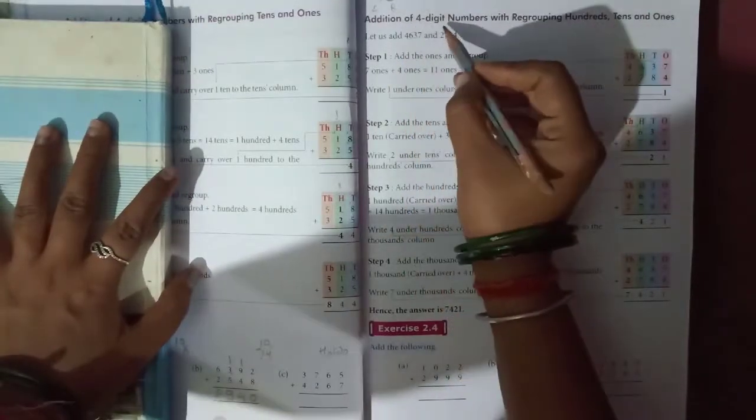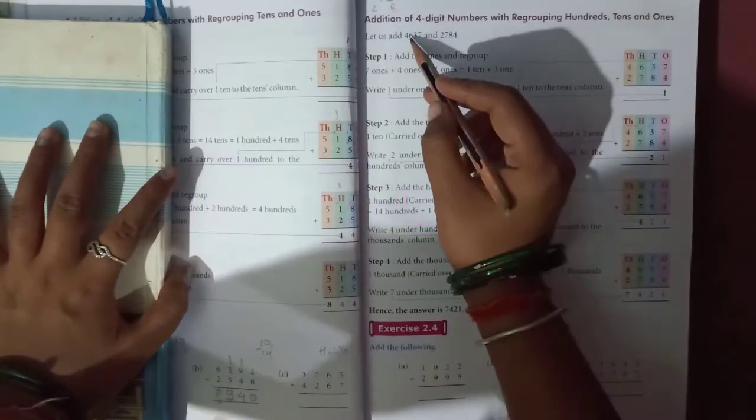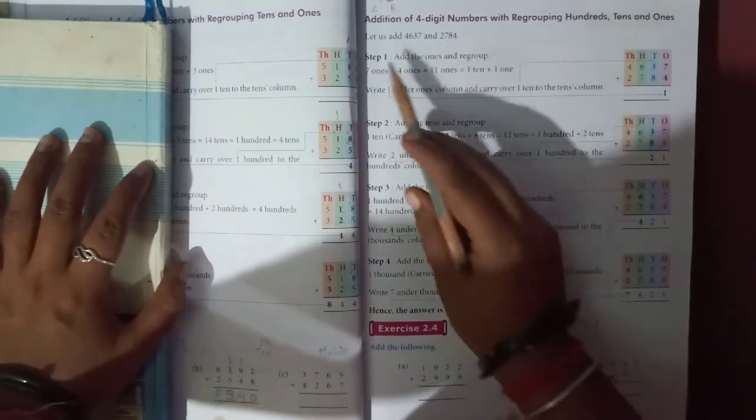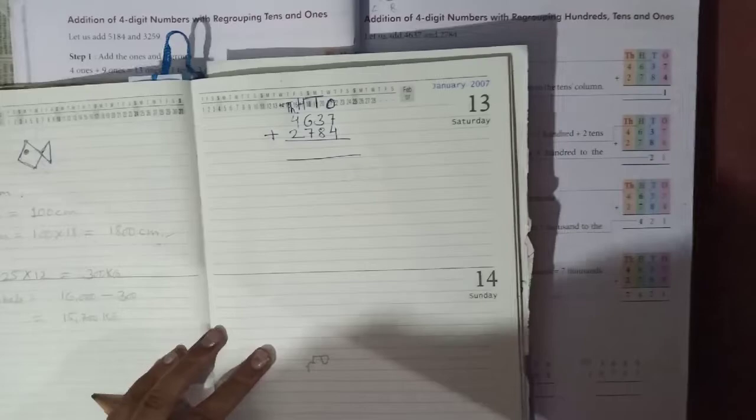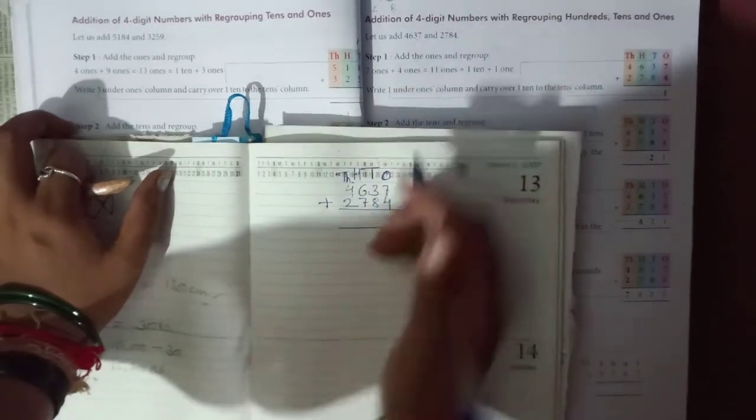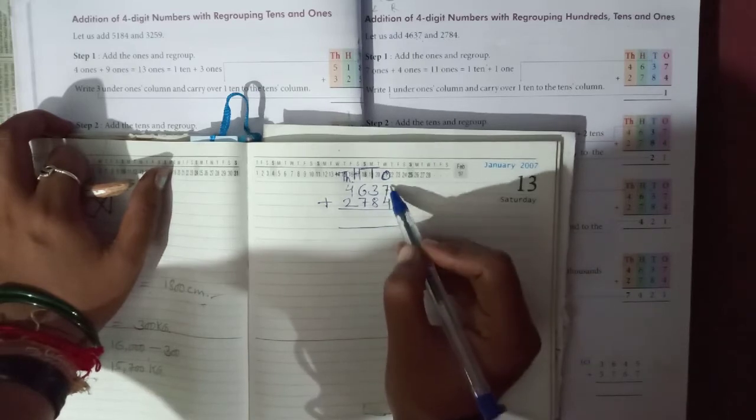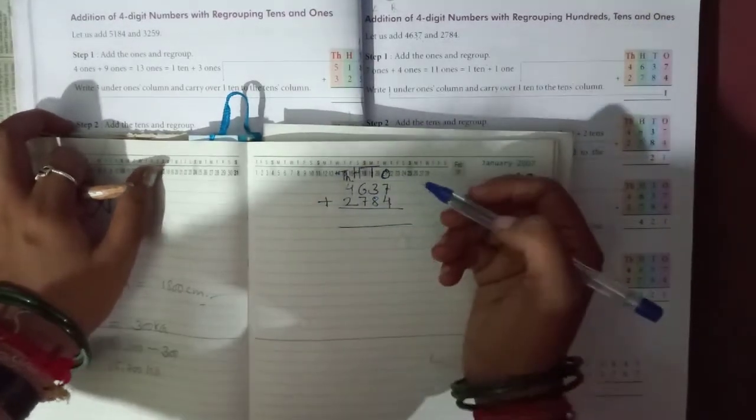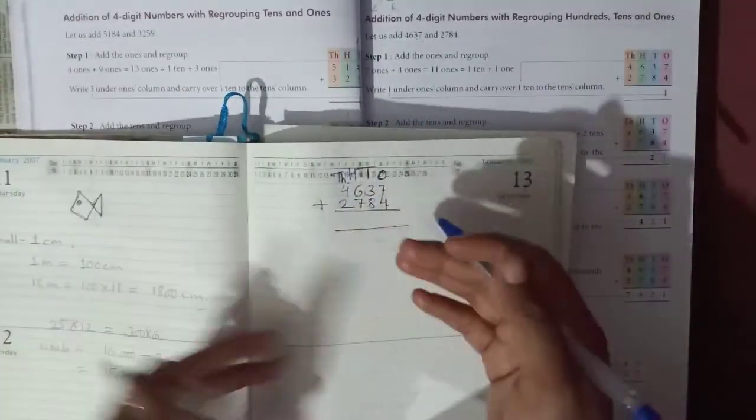Hello students, addition of four digit numbers with regrouping hundreds, tens and ones. Let us add 4637 and 2784. Step one: add the ones and regroup. First, write these numbers in a group. In ones numbers like this, seven is one, four is one, so they are equal. They are in one line.